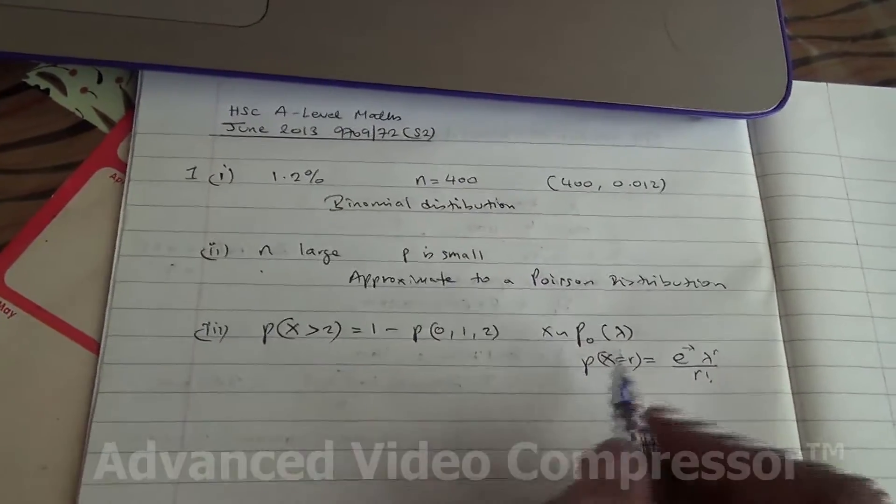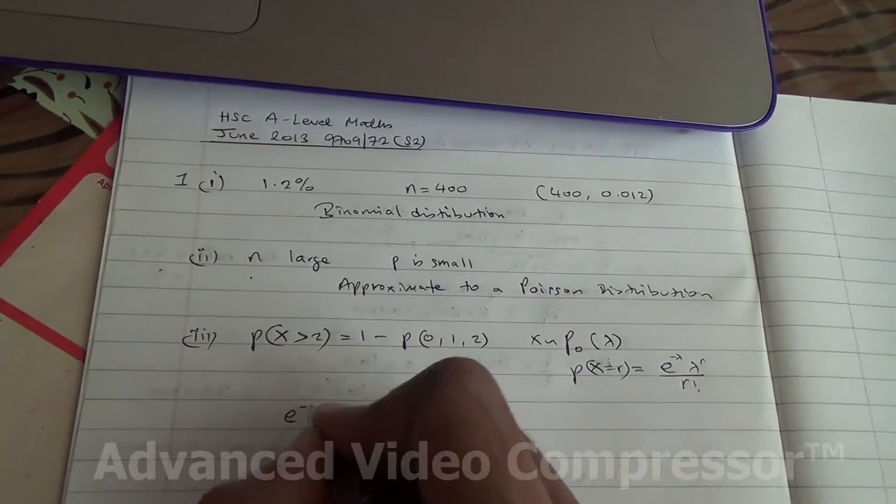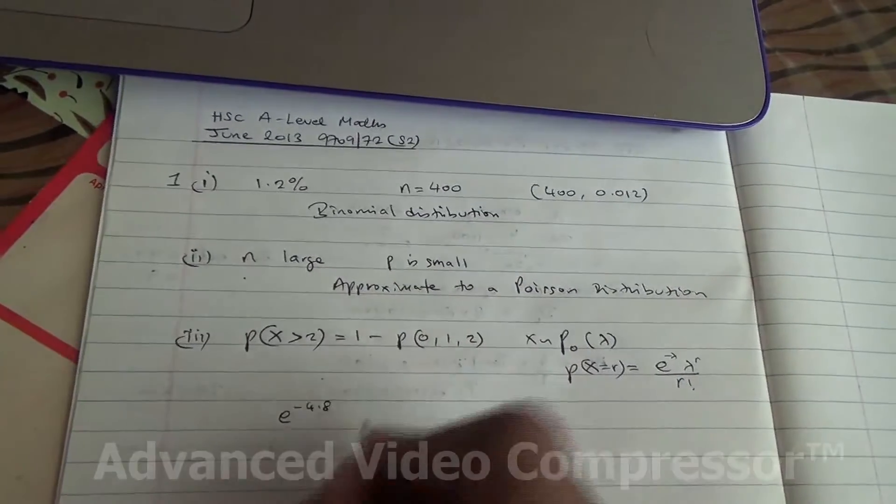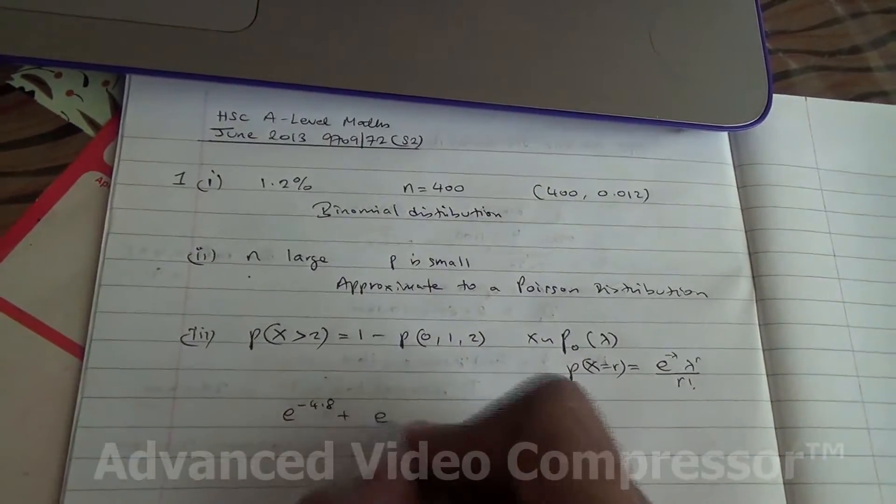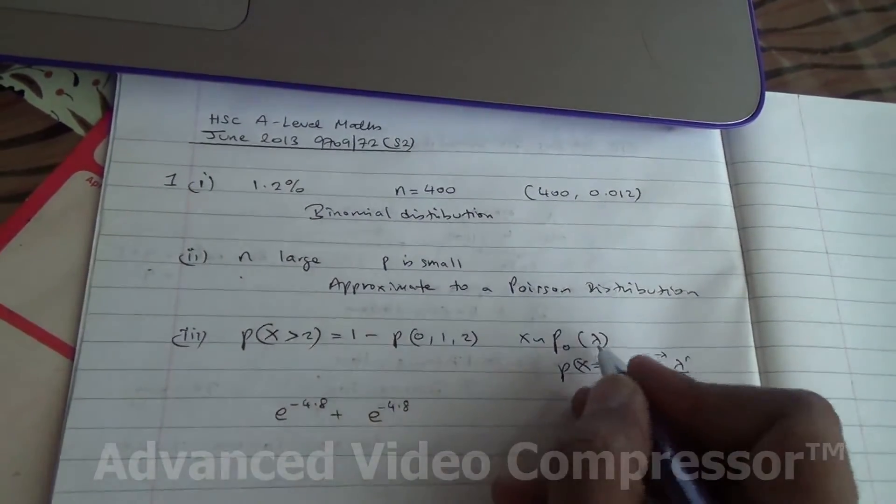Applying this, where are we going to lead? So for 0, then e to the power of minus 4.8, the mean lambda. Plus e to the power of minus 4.8.